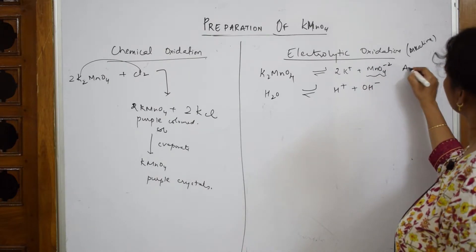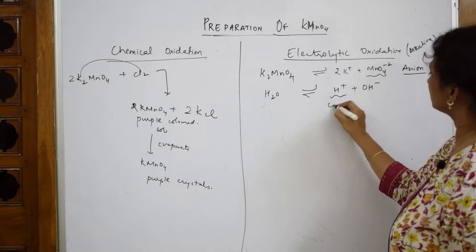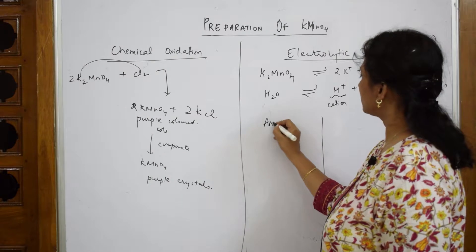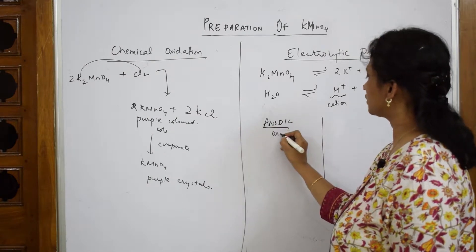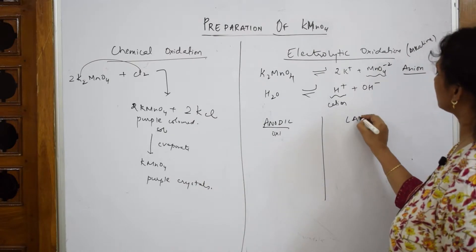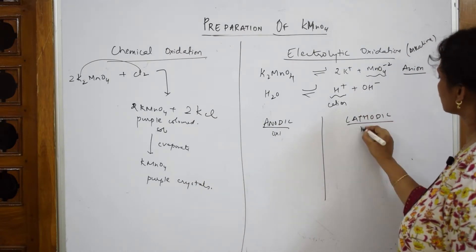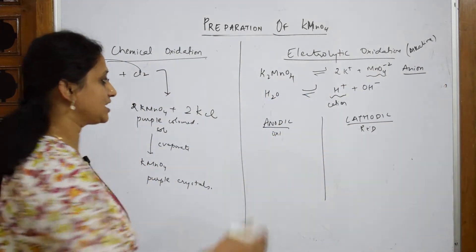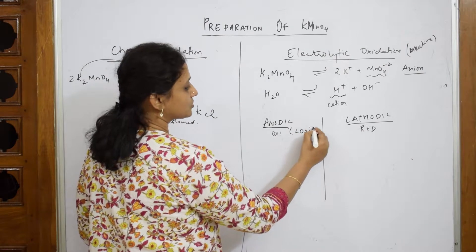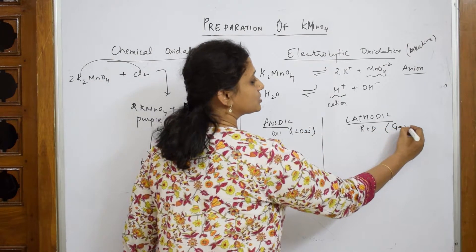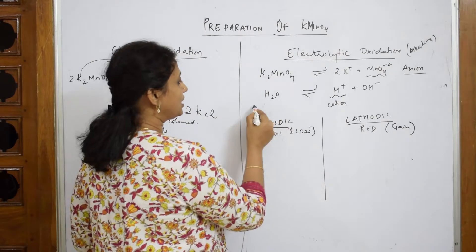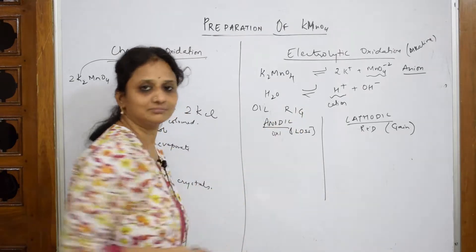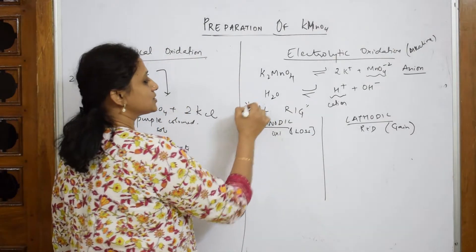We identify the anions and cations and write two cell reactions. In the anodic reaction, oxidation always occurs; in the cathodic reaction, reduction always occurs. Oxidation is loss of electrons; reduction is gain of electrons — OIL RIG — a common concept you studied in school.